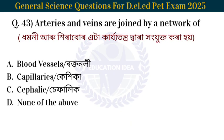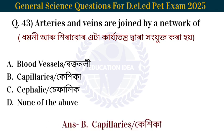Next question: Arteries and veins are joined by a network of? Arteries and veins are connected to each other by a network of capillaries.